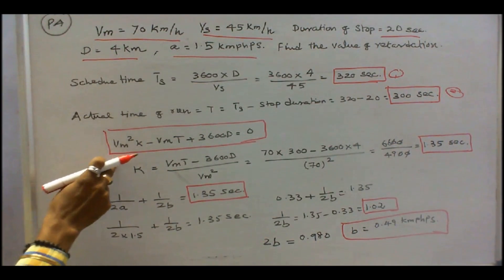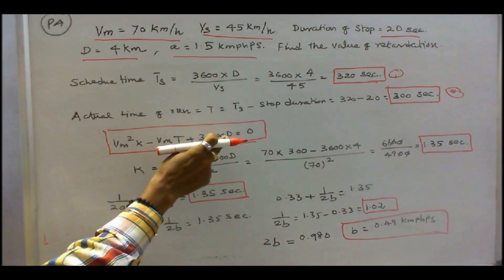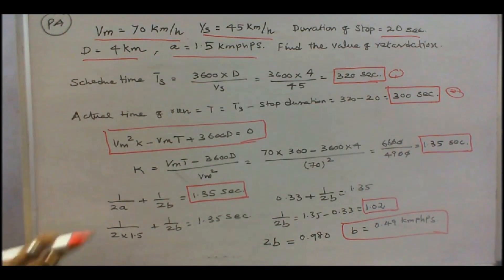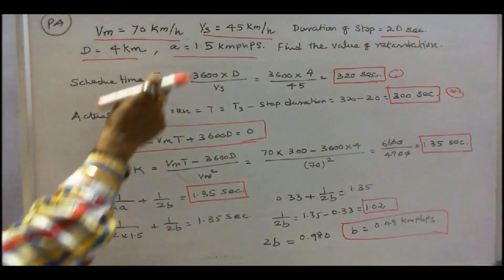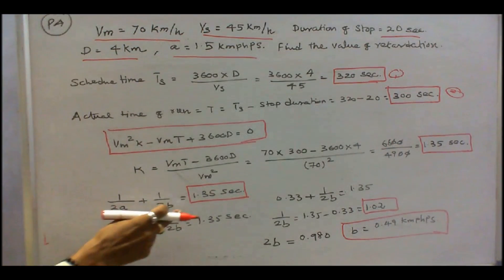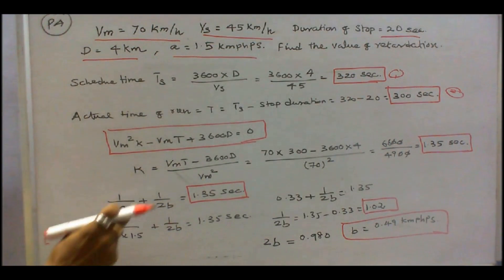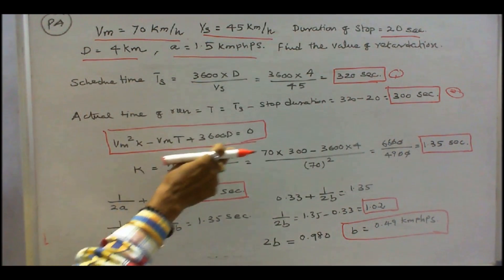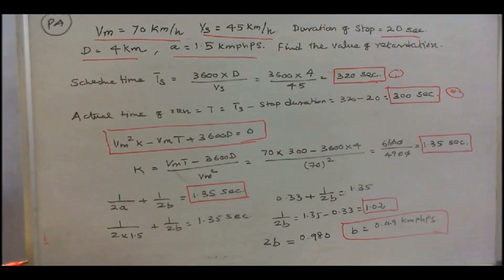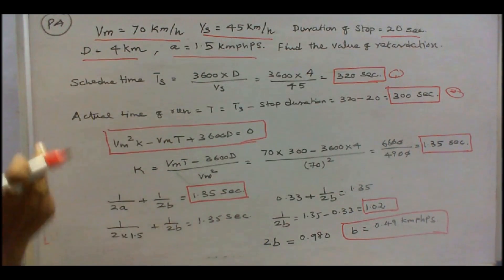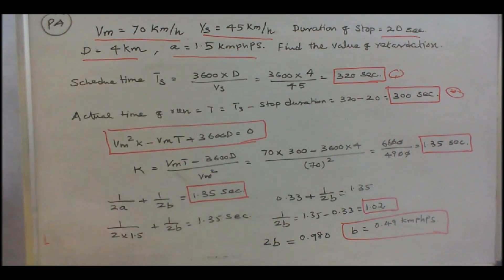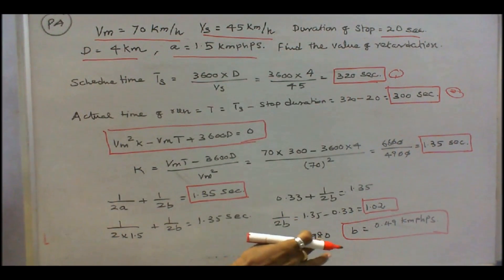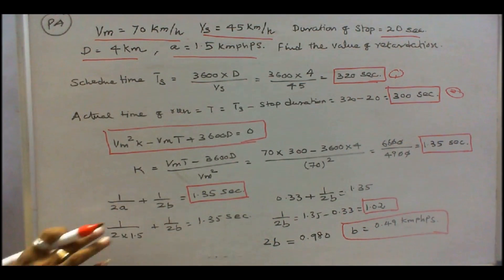Using vm squared times k minus vm times T plus 3600 times d equals zero, where k equals 1 over 2a plus 1 over 2b, and a is given as 1.5 km per hour per second. Solving for k and then for b, substituting all known values of maximum speed, actual time, and distance, we find the value of retardation b equals 0.49 km per hour per second.